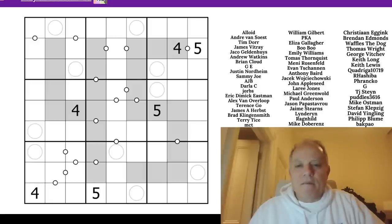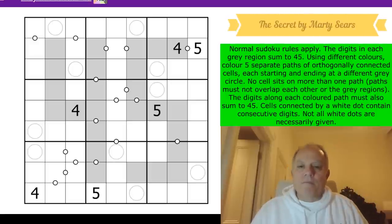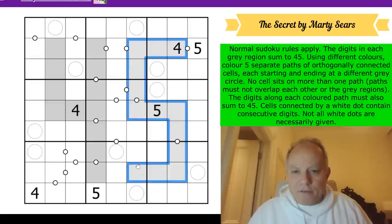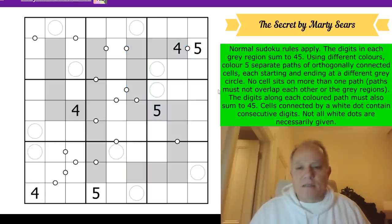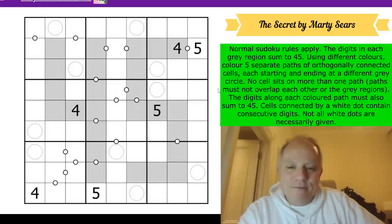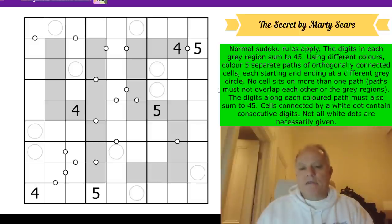Right. Let us look at The Secret by Marty Sears. Give it a try on the link under the video. I'm going to explain the rules now. Normal Sudoku rules apply. The digits in each grey region sum to 45. Very appropriate. So there are two grey regions, obviously. Using different colours, colour five separate paths of orthogonally connected cells, each starting and ending at a different grey circle. These are the snakes, as I'm calling them. No cell sits on more than one path. Paths must not overlap each other or the grey regions. That's quite interesting. The digits along each coloured path must also sum to 45. Wow. This is really used heavily. Cells connected by a white dot contain consecutive digits. Not all white dots are necessarily given. Okay. Those are understandable rules. Let's have a go at the puzzle.